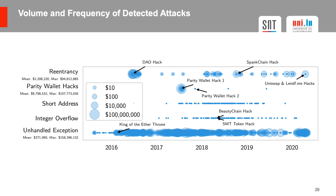In this figure we tried to measure the volume of stolen funds in terms of US dollars per attack. We do not have volume numbers for short address and integer overflow attacks since these involve tokens and we were not able to obtain the price of these tokens at the moment of the attack. Overall, the DAO hack and the first Parity wallet attack resulted in a large amount of funds being stolen, and unhandled exceptions resulted in a large number of funds not being transferred to their rightful owners. The number of short address attacks and integer overflows seem to have decreased over time, whereas reentrancy attacks and unhandled exceptions seem to have remained almost constant.